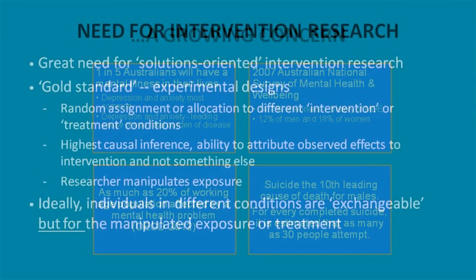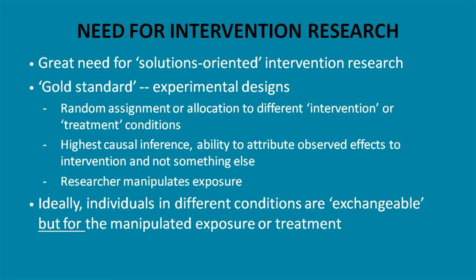What we'd really love to have is solutions to some of work-related mental health problems. We typically tend to think first, for solutions-oriented research, towards experimental designs — the gold standard of causal inference. These are characterized by random assignment to different treatment or intervention conditions. We have the greatest ability to attribute observed changes to the intervention with these sorts of designs. The key feature is that the researcher manipulates the exposure or allocation to treatment or intervention groups. Ideally, the individuals randomized to different conditions are exchangeable but for the exposure.